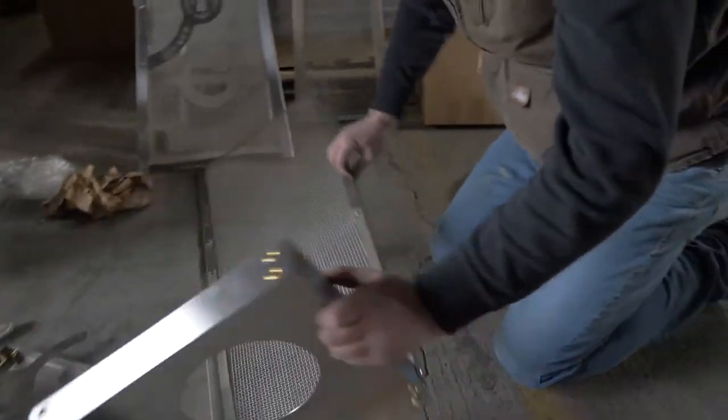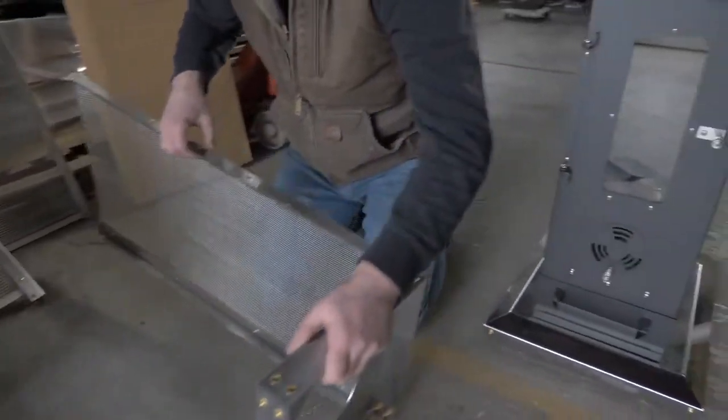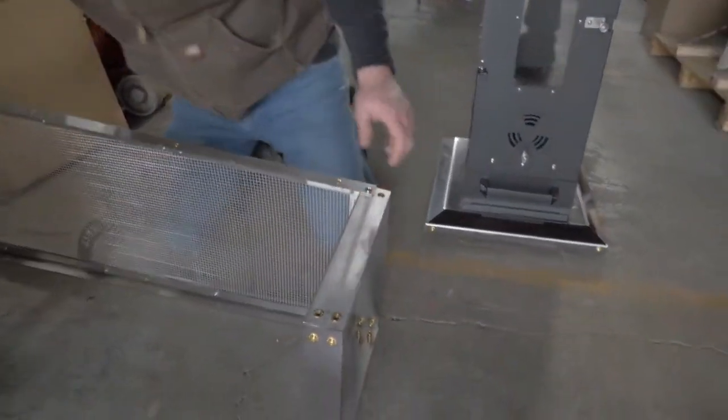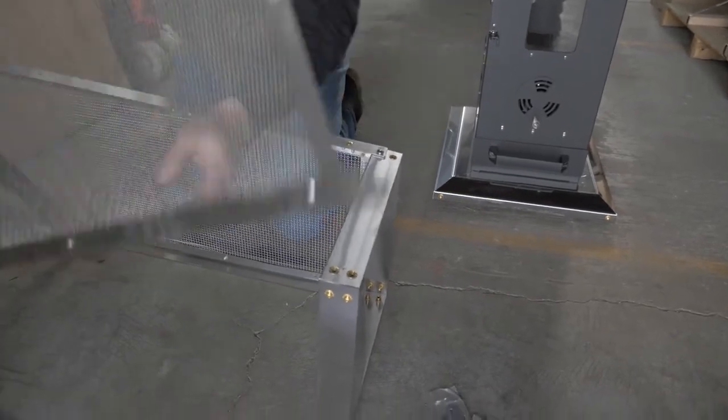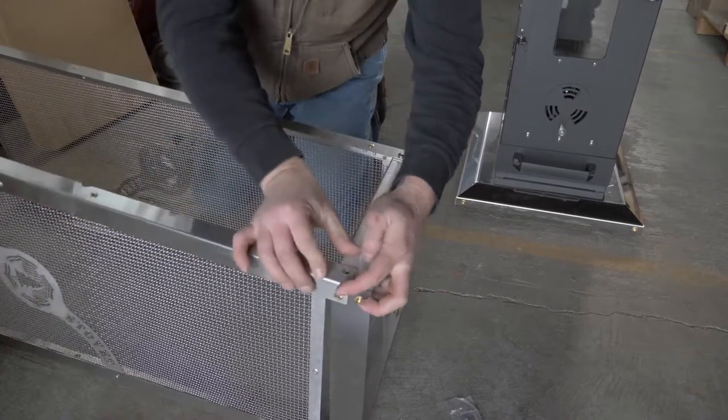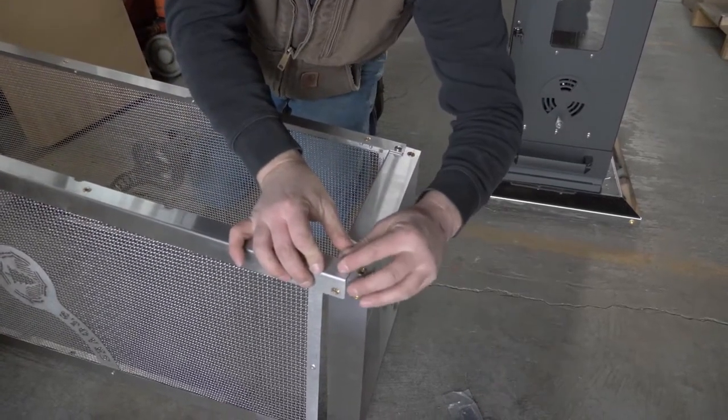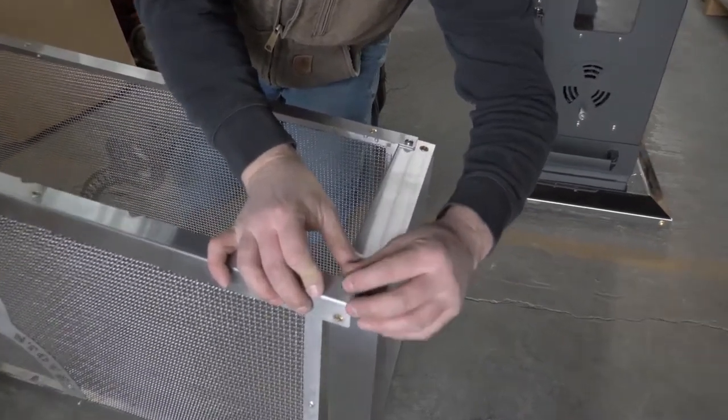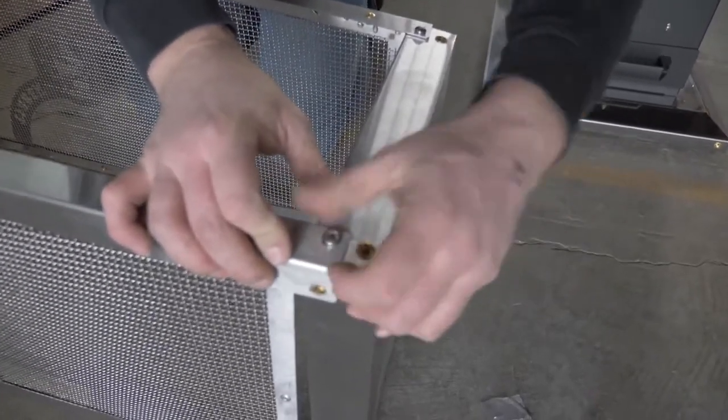Flip the middle baffle pan so that you can assemble the bottom right panel. Attach using quarter 20 by half inch bolts on all four sides.